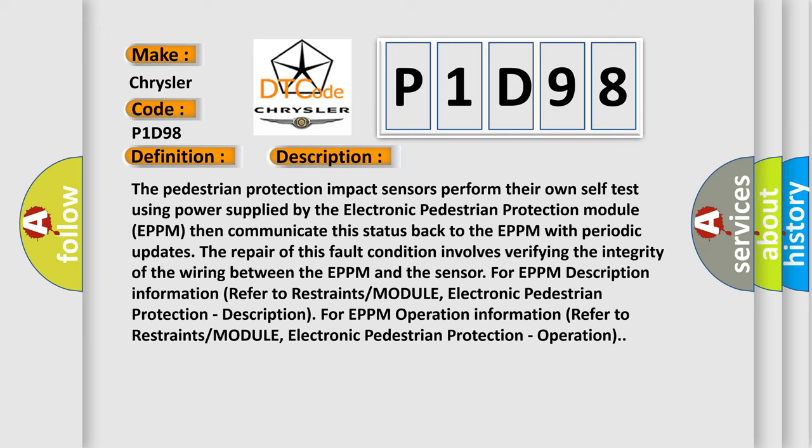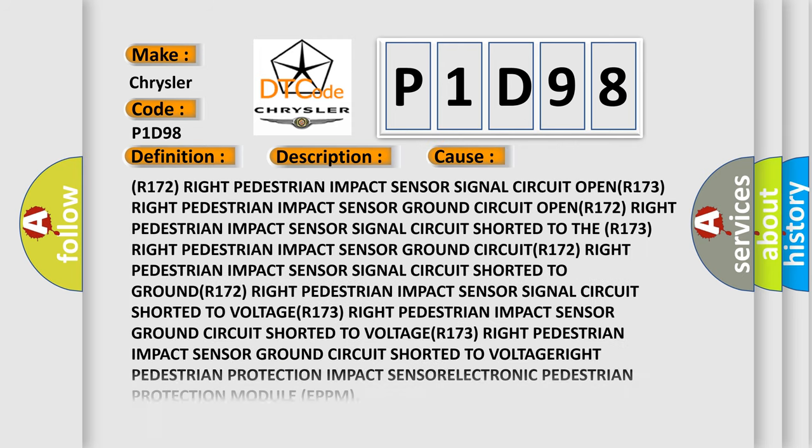This diagnostic error occurs most often in these cases: R172 right pedestrian impact sensor signal circuit open; R173 right pedestrian impact sensor ground circuit open; R172 signal circuit shorted to R173 ground circuit; R172 signal circuit shorted to ground; R172 signal circuit shorted to voltage; R173 ground circuit shorted to voltage.